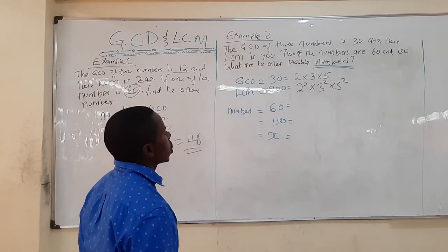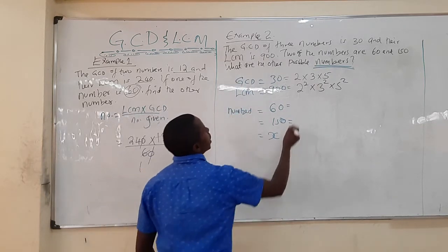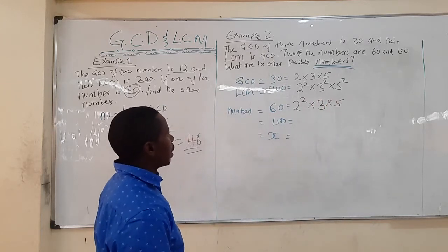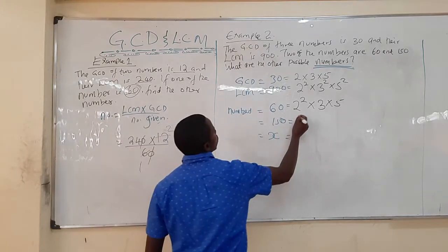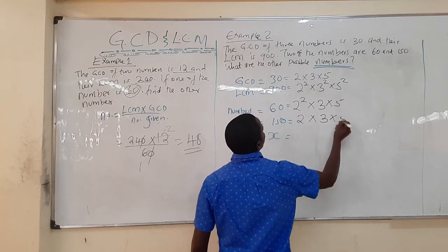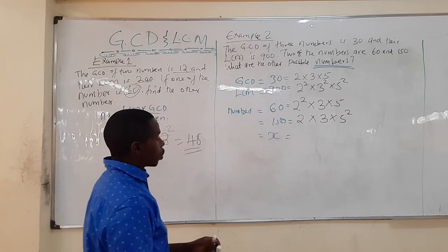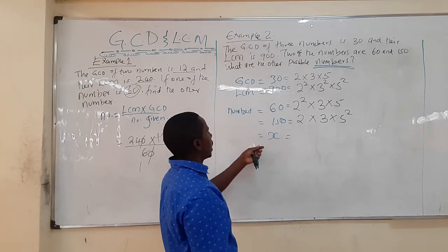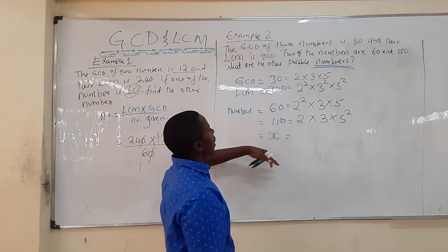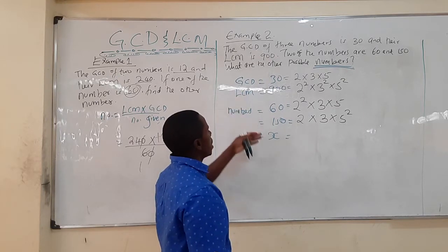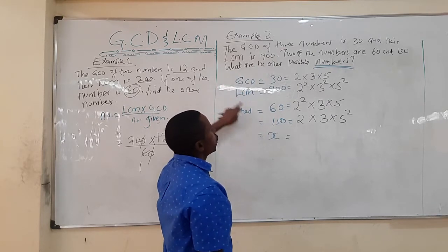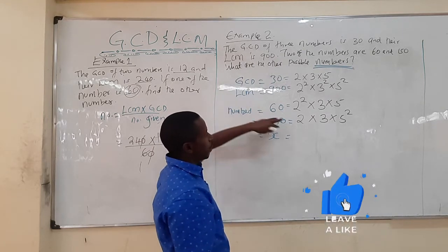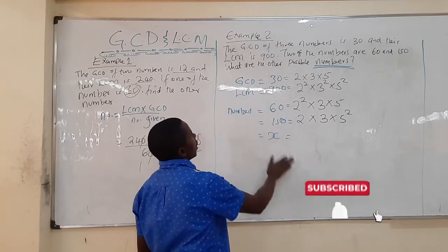60 = 2² × 3 × 5, and 150 = 2 × 3 × 5². Now we are going to compare the numbers using the LCM to find the other possible values. We use the prime factor method: for the GCD, a prime must appear in all numbers and we take the smallest power; for the LCM, the prime just needs to appear in at least one number and we take the highest power.